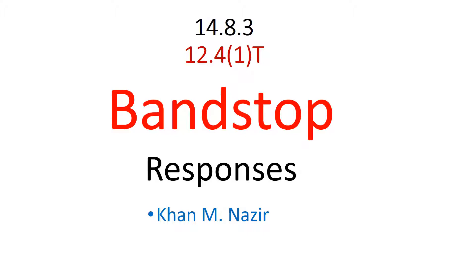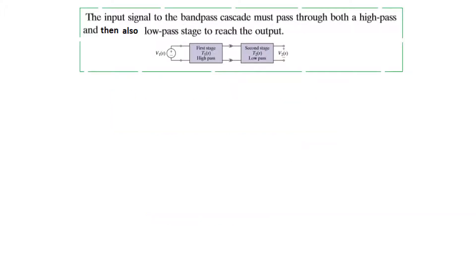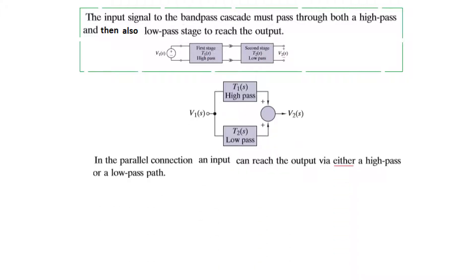In this video we'll discuss band stop responses or band stop filters. We saw in the case of a band pass filter that two stages — the high pass and the low pass — are cascaded in series, but in the case of a band stop filter we have to put these two filters in parallel.